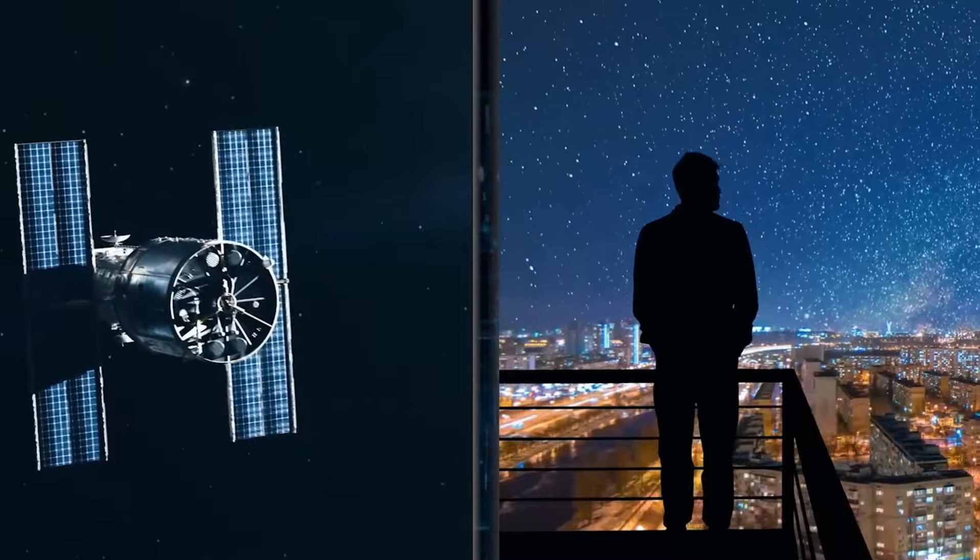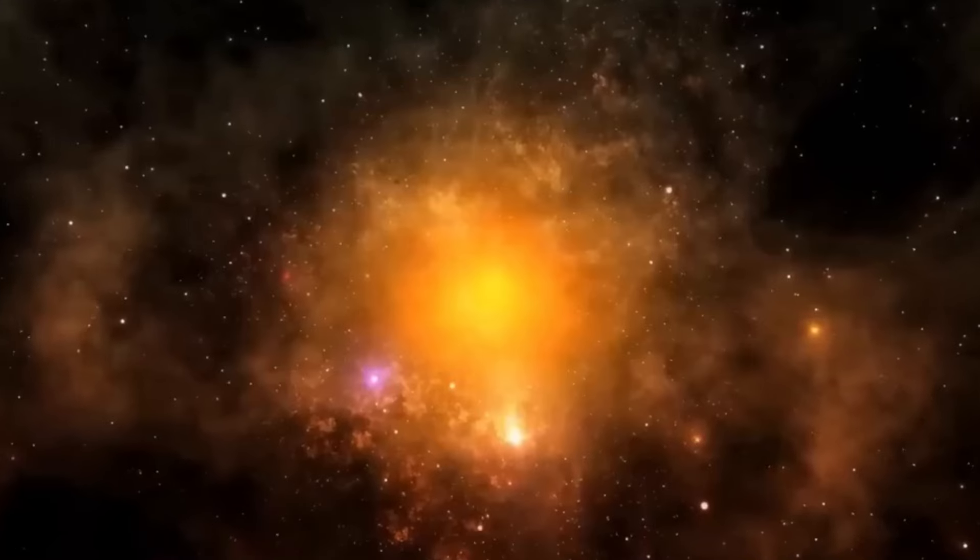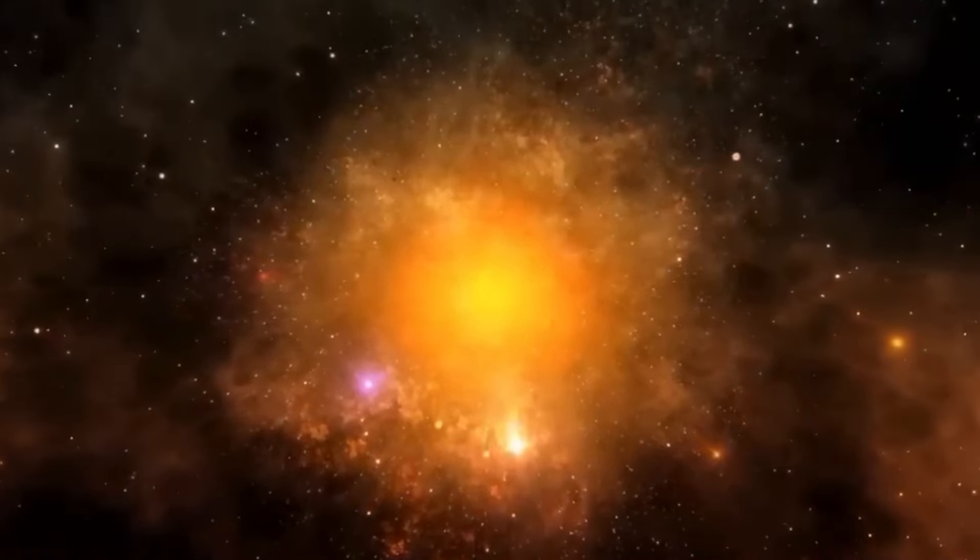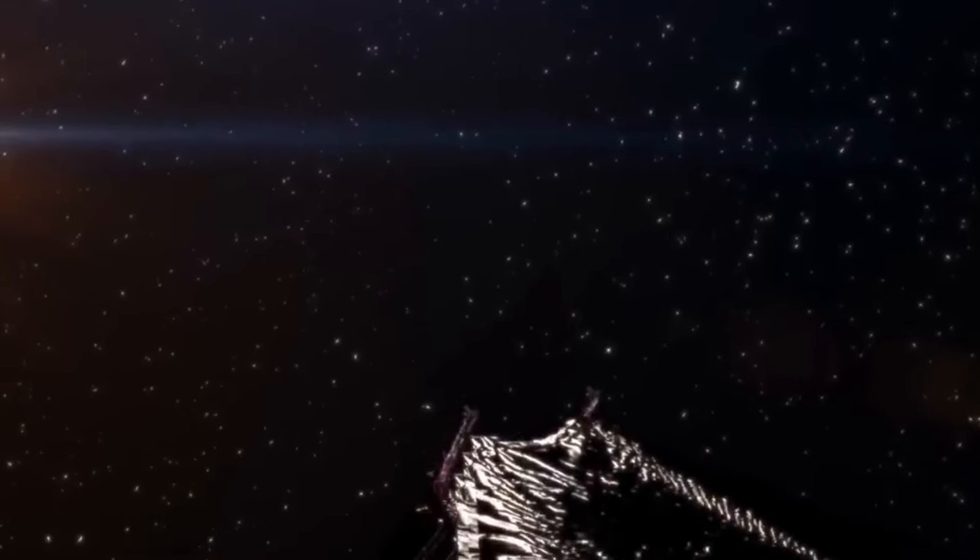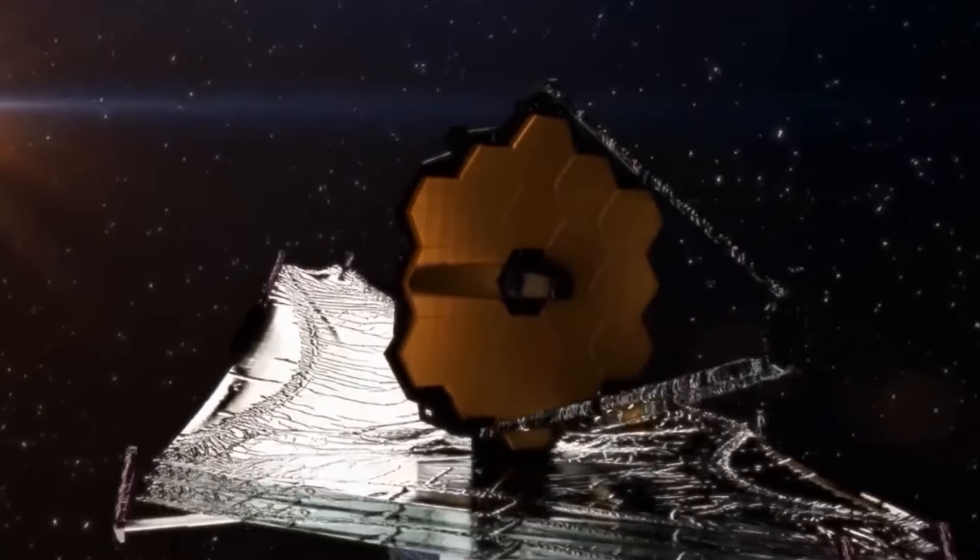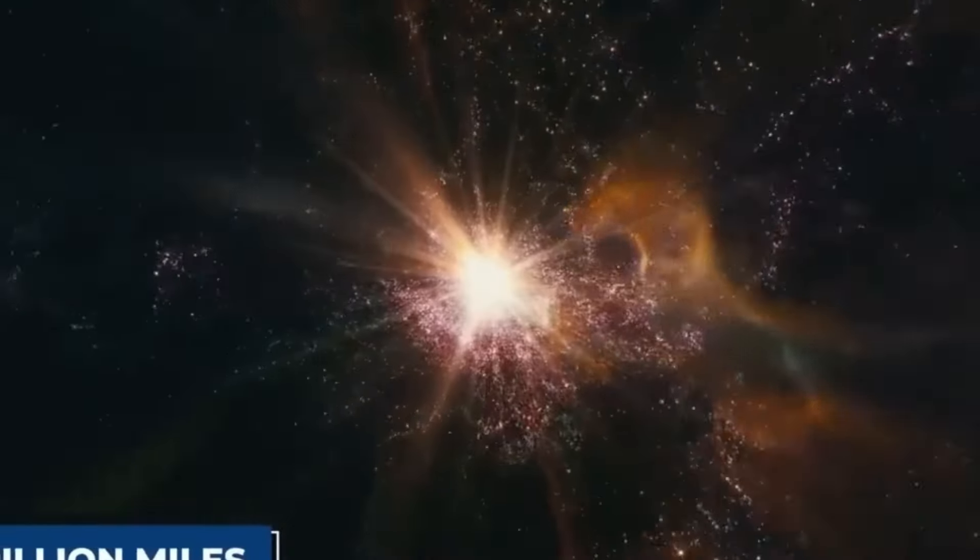Positioned at the L2 Lagrange point, about 1.5 million kilometers from Earth, the JWST orbits the Sun instead of Earth. This strategic location ensures a stable and unobstructed view of the cosmos, minimizing interference from Earth's atmospheric disturbances and heat.